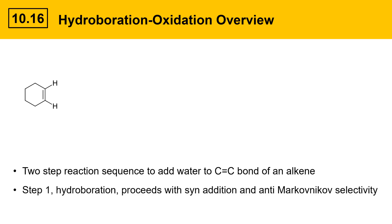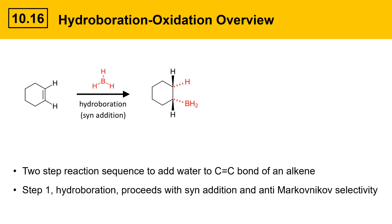In the first step, hydroboration proceeds with syn addition and anti-Markovnikov selectivity. The reagent borane, BH3, adds with syn addition across the CC double bond of the alkene. That leads to an intermediate called an alkyl borane, where boron has become attached to one of the carbons of the alkene and a hydrogen is attached to the other.